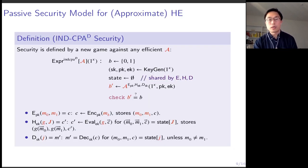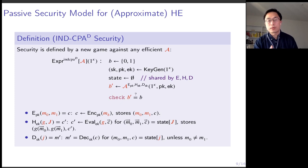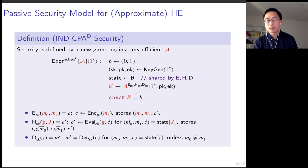To do this, we introduce a new security notion: the IND-CPA-D security, or IND-CPA with a special decryption oracle, to formalize passive attackers against approximate homomorphic encryption schemes. This security is defined by a standard indistinguishability game where the adversary is given access to three stateful oracles: the encryption oracle, the evaluation oracle, and the special decryption oracle. The encryption oracle is a standard left-or-right oracle that takes a pair of messages from the adversary, encrypts one depending on a secret bit, returns the ciphertext to the adversary, and stores both the plaintext pair and the ciphertext into the state.